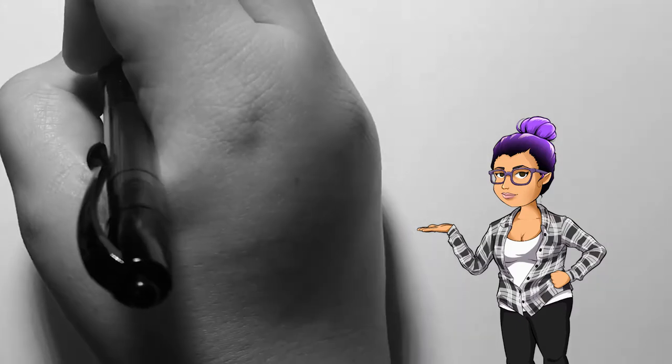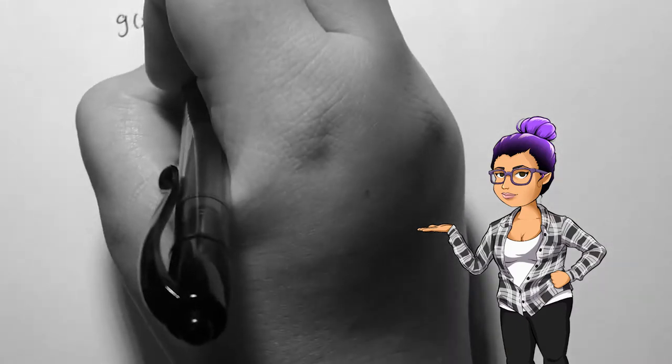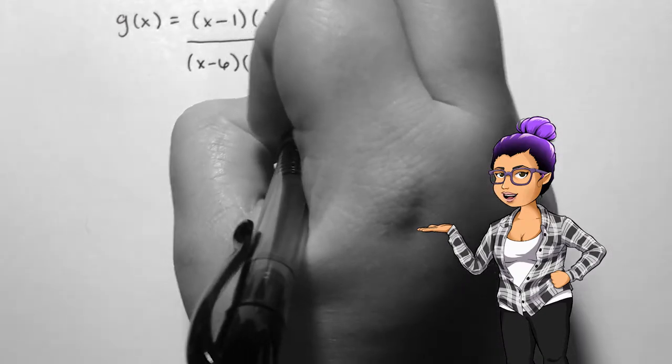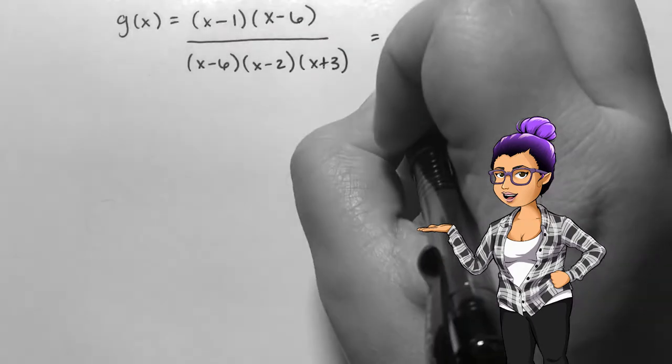Given the function g(x) equals x minus 1 times x minus 6 over x minus 6 times x minus 2 times x plus 3, we should write down all of the features we can see from the equation before trying to make a graph.